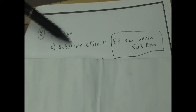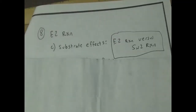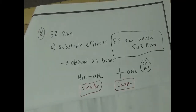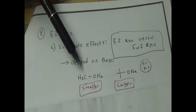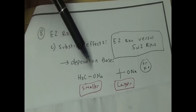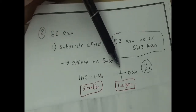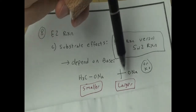There were substrate effects where sometimes you have an E2 reaction and sometimes you have an SN2 reaction. I just wanted to review that quickly. If you have a really small alkoxide base, like methoxide or ethoxide — one carbon, two carbon, three carbon — or just a generally small alkoxide base, you get one behavior.